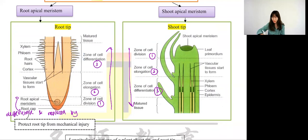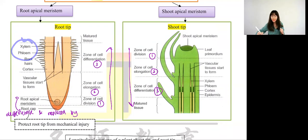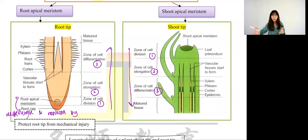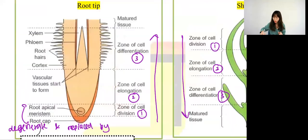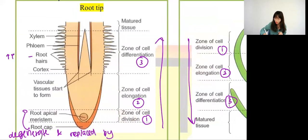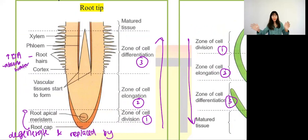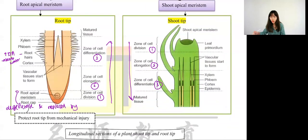Next, differentiation means the cells have their specific function. From the root tip, you can see they will start to have xylem and phloem. Xylem will carry out its function to transport water and minerals, and phloem transports food — which is organic substances. At the side we have root hair. Root hair is to increase surface area, and increasing surface area is to absorb more water. Root hair comes in many, many numbers, and that is the purpose of root hair.